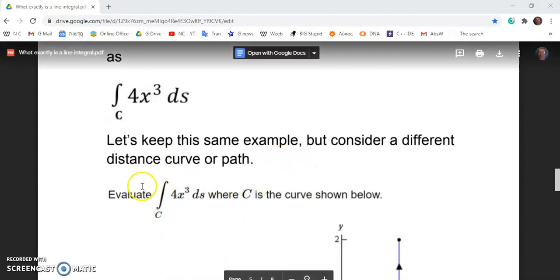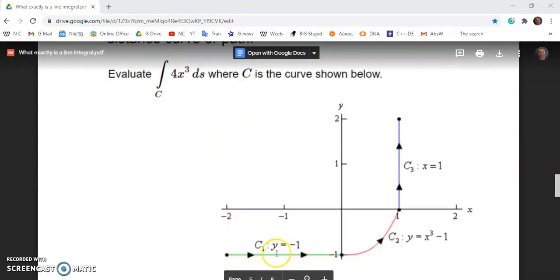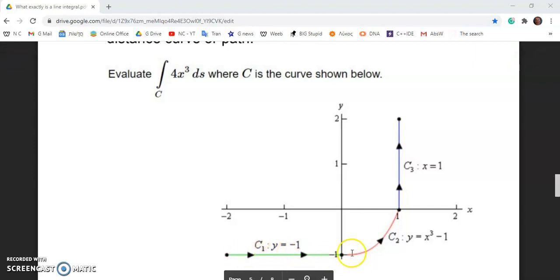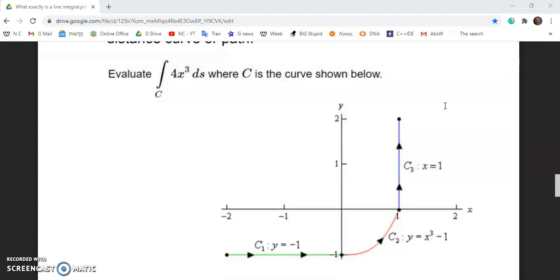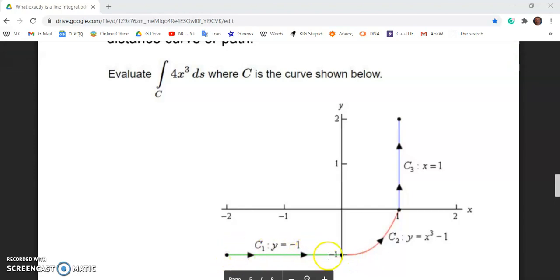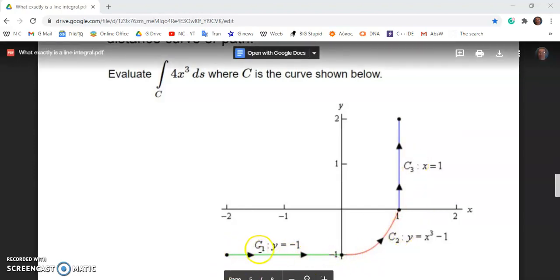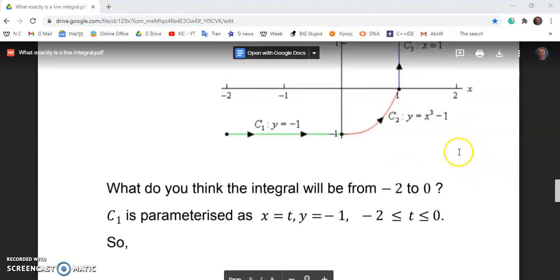So let's keep the same example, but consider a different distance curve or path. So if we look at this example where C is this curve here, it's made up of pieces, smooth pieces, the green piece, the red piece and the blue piece. By the way, a line integral is something that actually immediately refutes everything that mainstream academics say about calculus working on non-smooth curves because the only way you can evaluate a line integral is to evaluate it piece by piece.